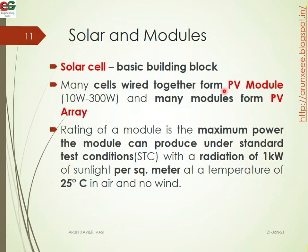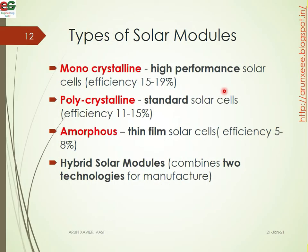The rating of the module is maximum power the module can produce under standard test conditions (STC). Standard test conditions are 1 kilowatt of sunlight per square meter at a temperature of 25 degrees. Different types of solar cells are available: monocrystalline and polycrystalline. Monocrystalline has high performance compared to polycrystalline, with about 19% efficiency.